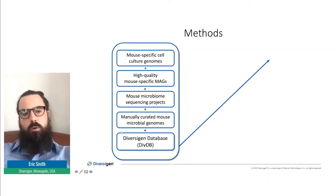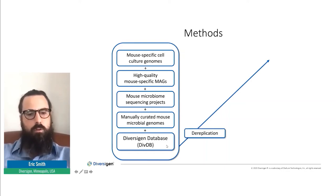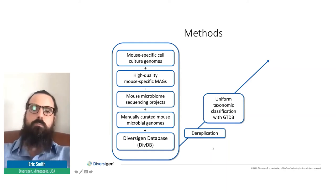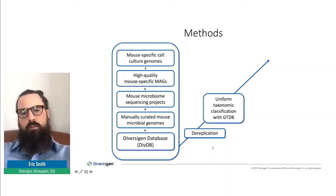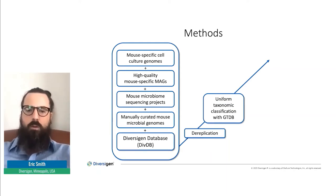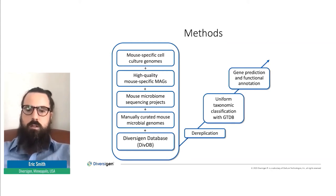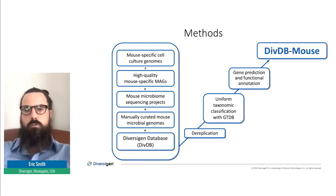We coupled that with our DiversagenDB, which is essentially our RefSeq database. We then went through a round of dereplication so we don't have strains that are over- or underrepresented, classified all of them uniformly for taxonomy with GTDB, and then developed the functional aspect of the database through a round of gene prediction and functional annotation — all coming together to create our DivDB Mouse.